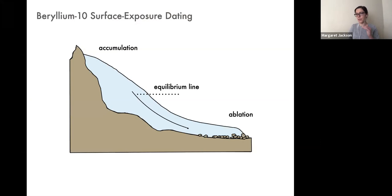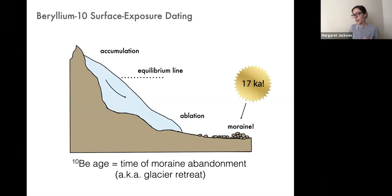I want to be clear about how we interpret these exposure ages. If we're sampling and dating the uppermost sediments on a moraine ridge, these would have been the sediments deposited last by a glacier before it retreated. We interpret the exposure age of a moraine as indicative of the time at which the moraine was abandoned by ice — and so the timing of past warming. A moraine 17,000 years old would indicate that 17,000 years ago, climate conditions at the site warmed.